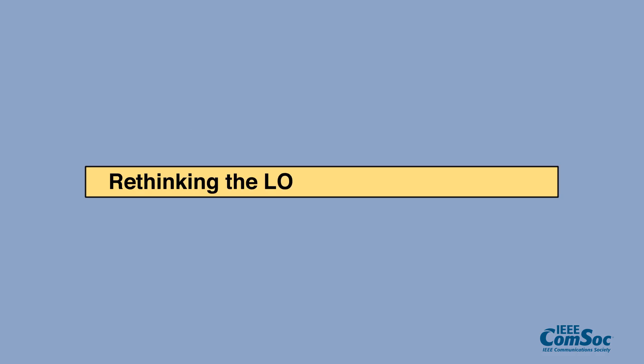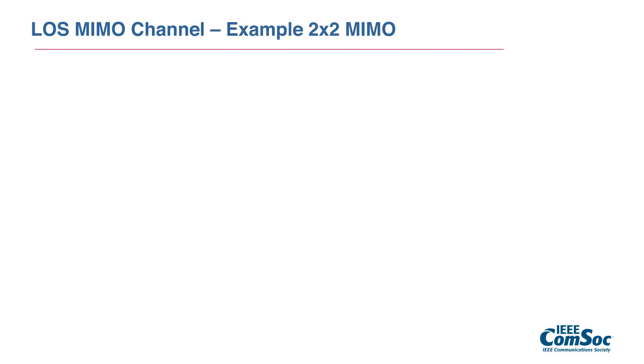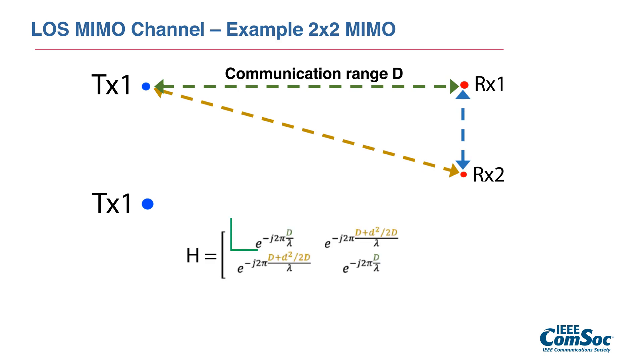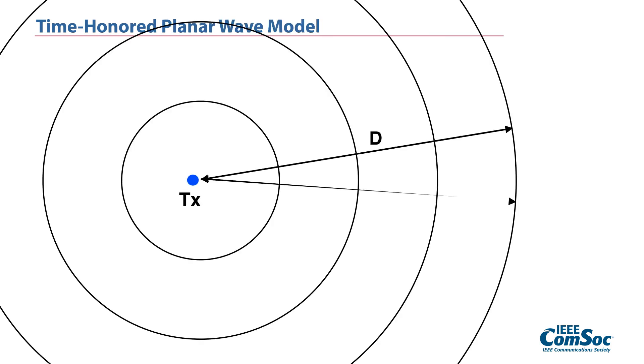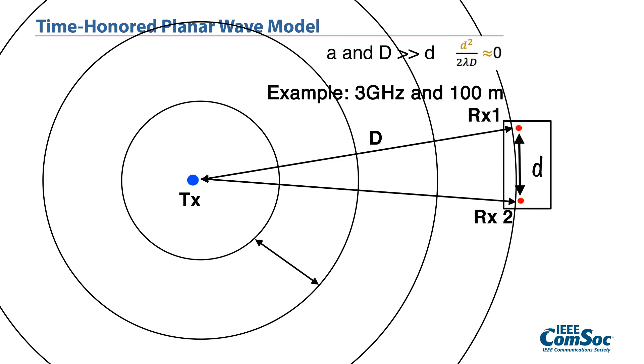To answer this question, we need to rethink the MIMO channel model under LOS conditions. We consider the following 2x2 MIMO channel and focus on the phase difference between two channel paths from transmitter-1 to receiver-1 and receiver-2. When communication distance is much larger than inter-antenna spacing normalized by the wavelength, such as sub-6 GHz case, the phase difference becomes negligible.